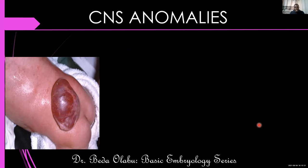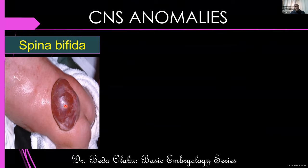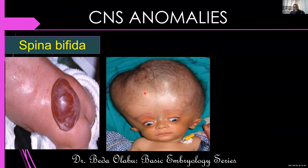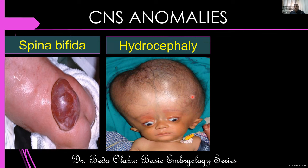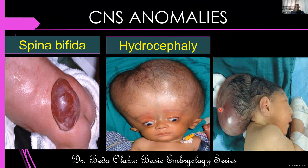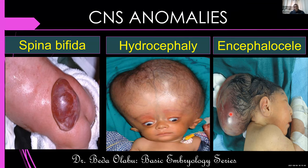Some malformations affect the central nervous system. We may have spina bifida or spinal dysraphism. We have hydrocephaly where the head is enlarged. And encephalocoele where some part of the brain is popping out. The first and last are due to defective fusion or closure of structures. The one in the middle — hydrocephaly — can be due to many mechanisms including obstruction of CSF flow.